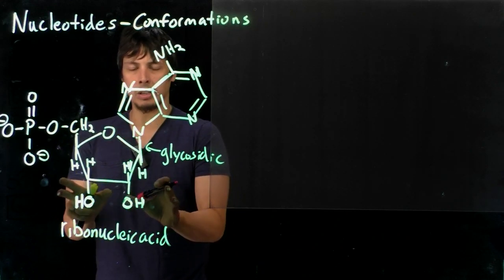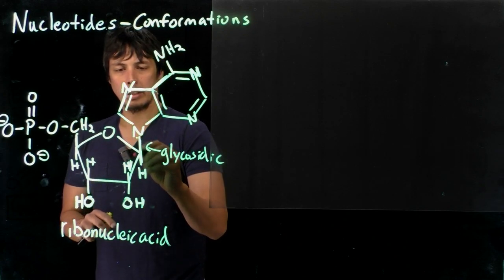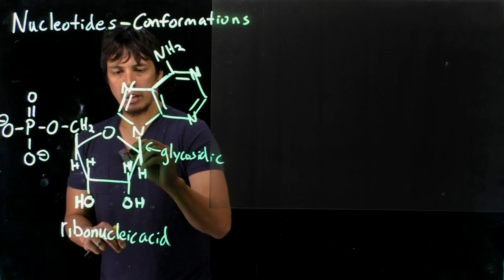So again at the center of this we have the ribofuranose ring, and then we number these carbons as 1, 2, 3, 4, 5.